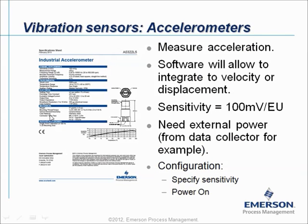On the left side you see a typical datasheet of an accelerometer and here a drawing of a sensor. An accelerometer measures acceleration, and the software or firmware will allow you to integrate it to velocity or displacement. The sensitivity can differ for every sensor, however most sensors on the market have a sensitivity of 100mV per engineering unit. They need an external power supply, which in most cases comes from the data collector. In the configuration, the two most important settings are that the sensitivity is correctly specified and that you power the sensor from the data collector.